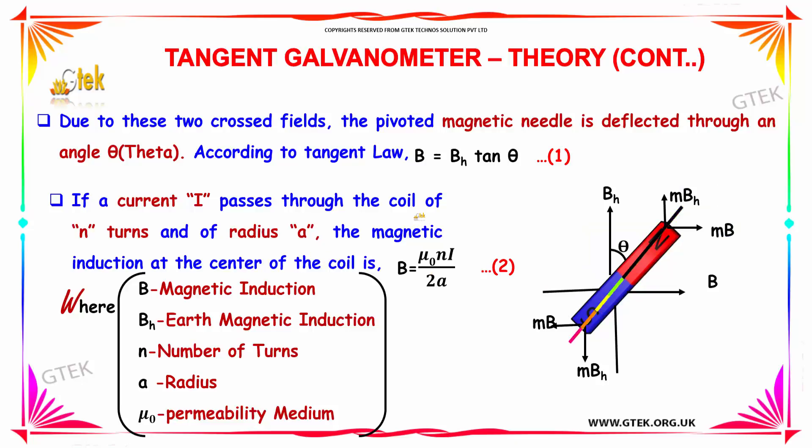If a current I passes through the coil of N turns and radius A, the magnetic induction at the center of the coil is B equals μ₀NI divided by 2A, where B is the magnetic induction, BH is the Earth's magnetic induction, N is the number of turns, A is the radius, and μ₀ is the permeability of medium.